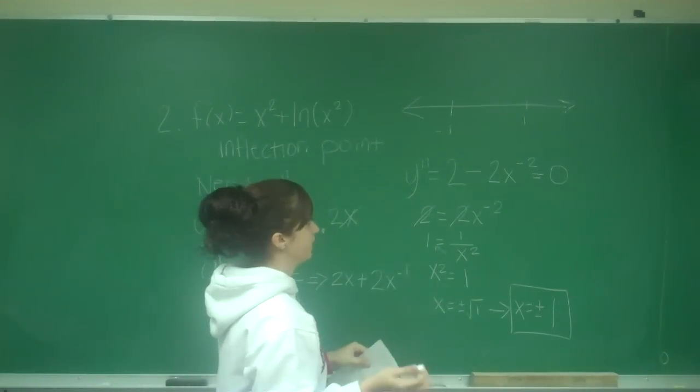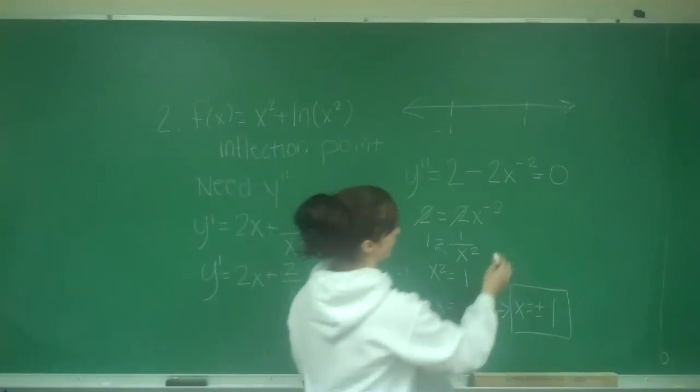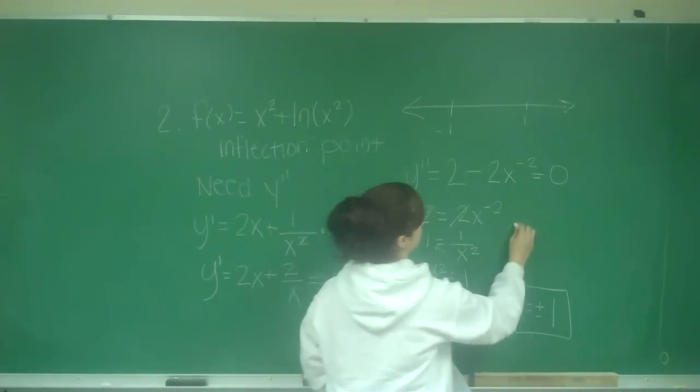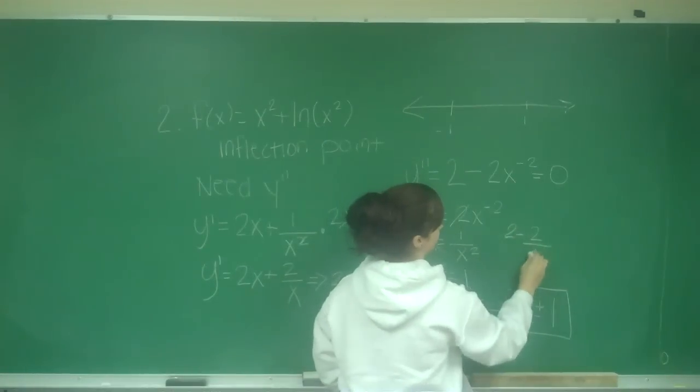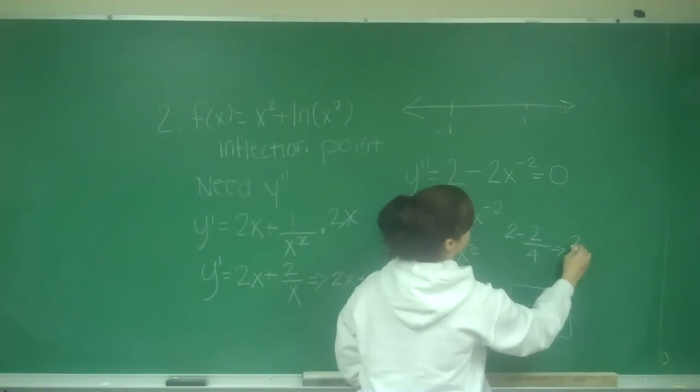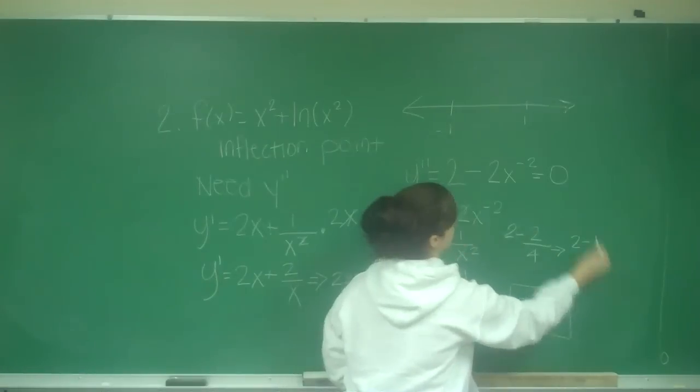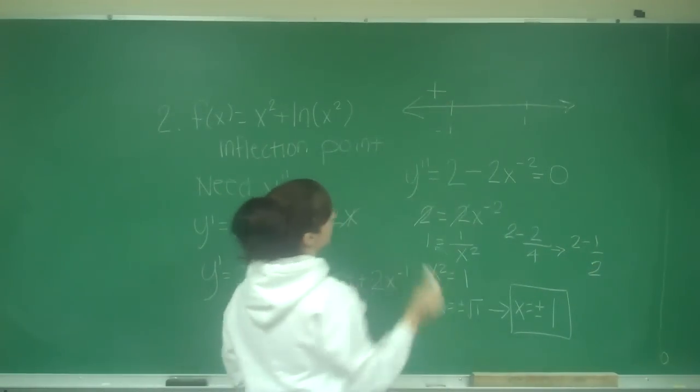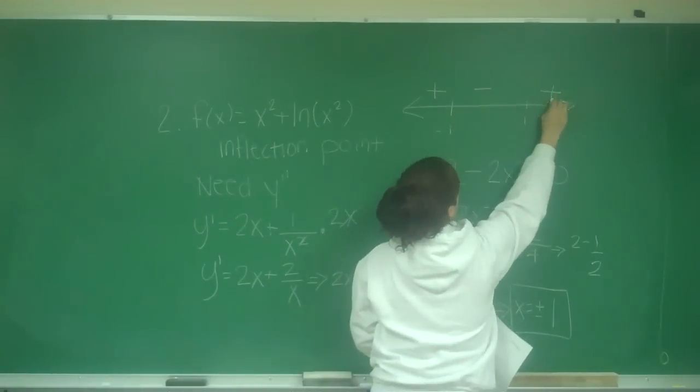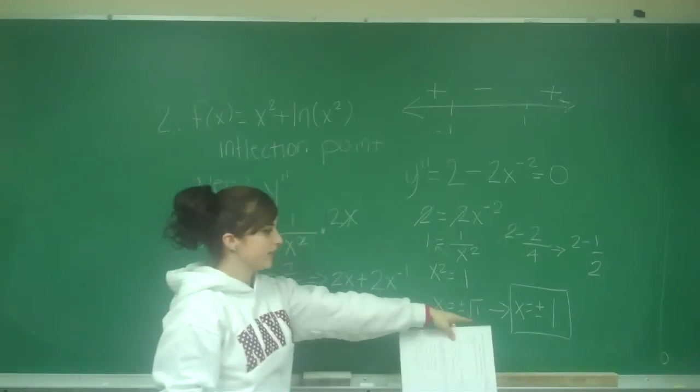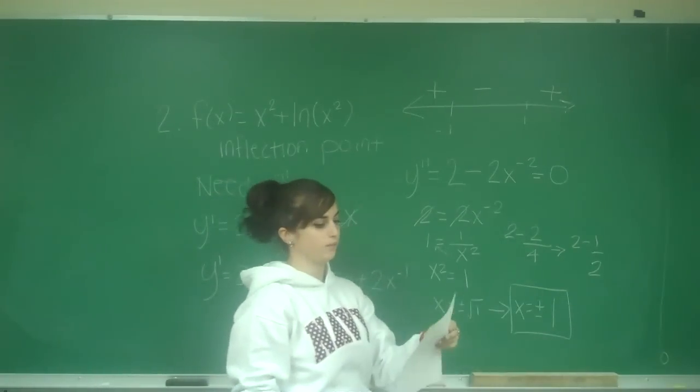We can plug in negative 2. I'll have 2 minus 2 over negative 2 squared, which would be 4, so I have 2 minus 1 half, so that's going to be positive. When I plug in a number here, I'm going to get negative, and here I will get positive. So your answer is x equals plus or minus 1.